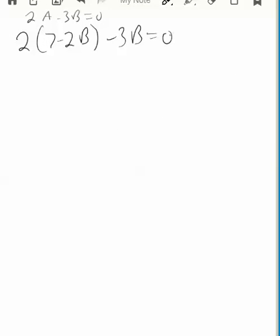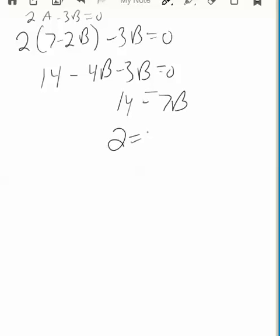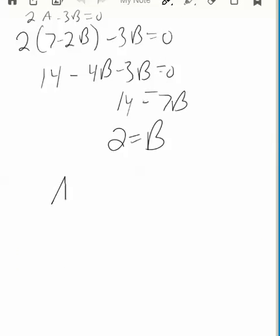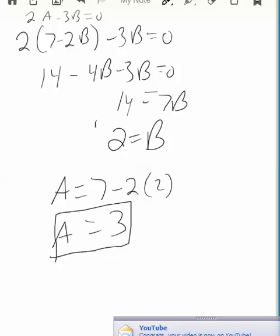Let's clean that up. 14 minus 4B minus 3B equals 0. So what's that going to be? 7B equals 14, B equals 2. If B equals 2 and earlier we said A was 7 minus 2B, so A equals 7 minus 2 times 2 which of course is 3. So A is 3.